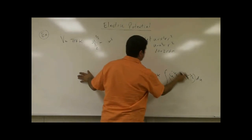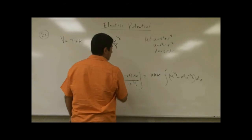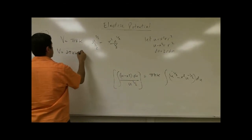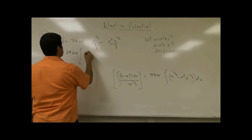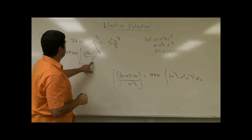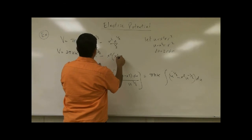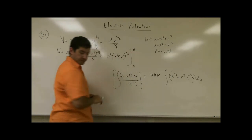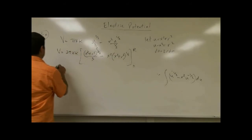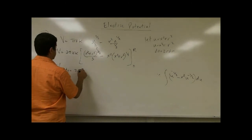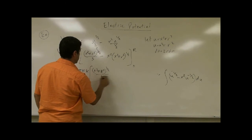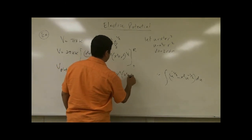Minus x squared, and the integral of u to the minus one-half is u to the one-half over one-half. Taking the 2 back to the top, we have 2 pi kappa. Now substituting back what u was: x squared plus r squared to the three-halves power over 3, minus x squared times the square root of x squared plus r squared, evaluated from 0 to R. Substituting R into little r gives x squared plus R squared to the three-halves over 3 minus x squared times the square root of x squared plus R squared.